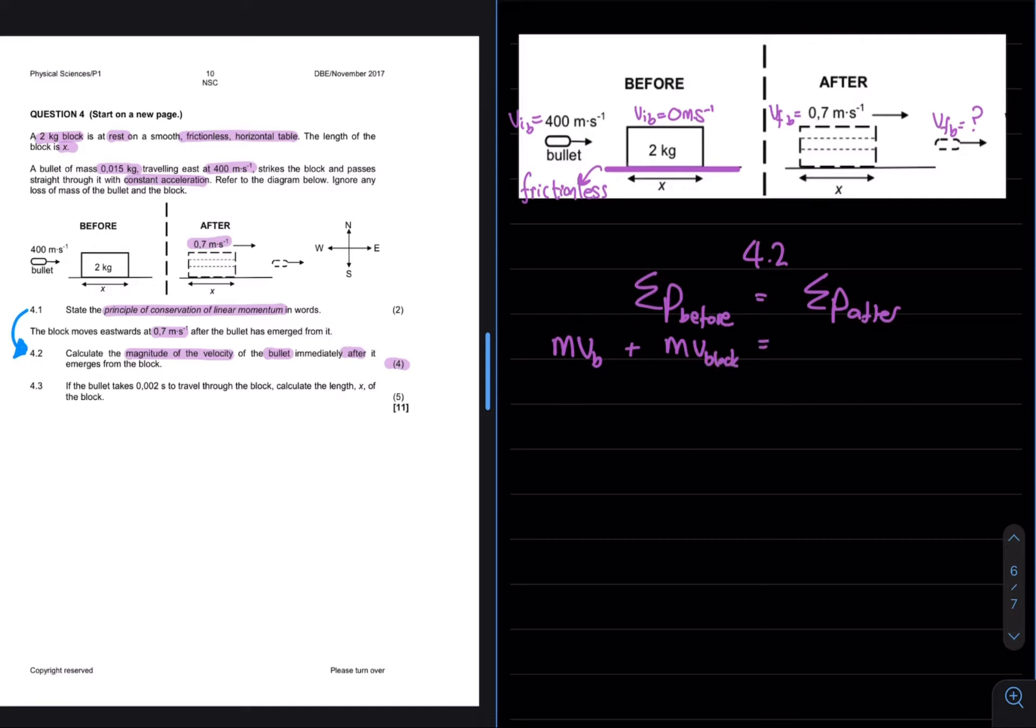After the collision we again have two bodies, the mass and velocity of the bullet, as well as the mass and velocity of the block. Seeing as the block is initially stationary, the velocity is zero, and therefore the block has no momentum before the collision.